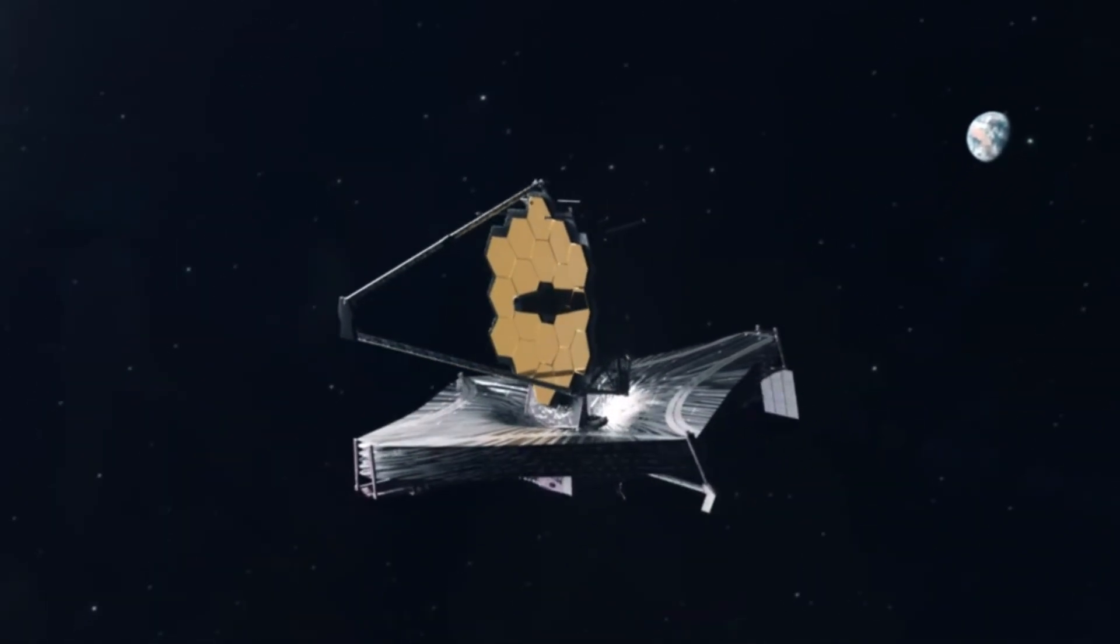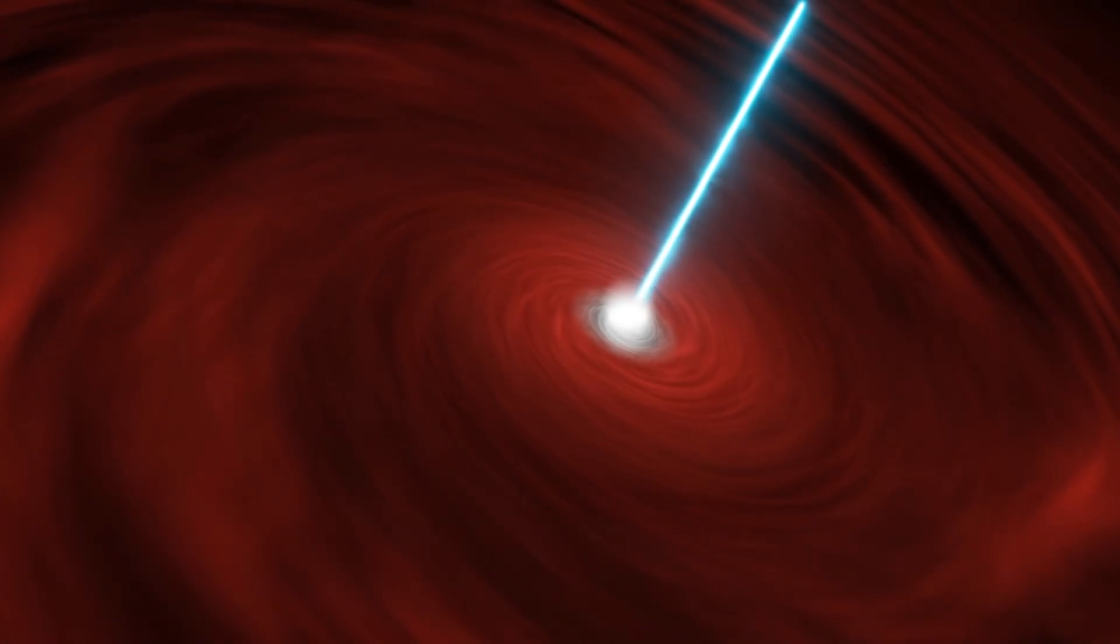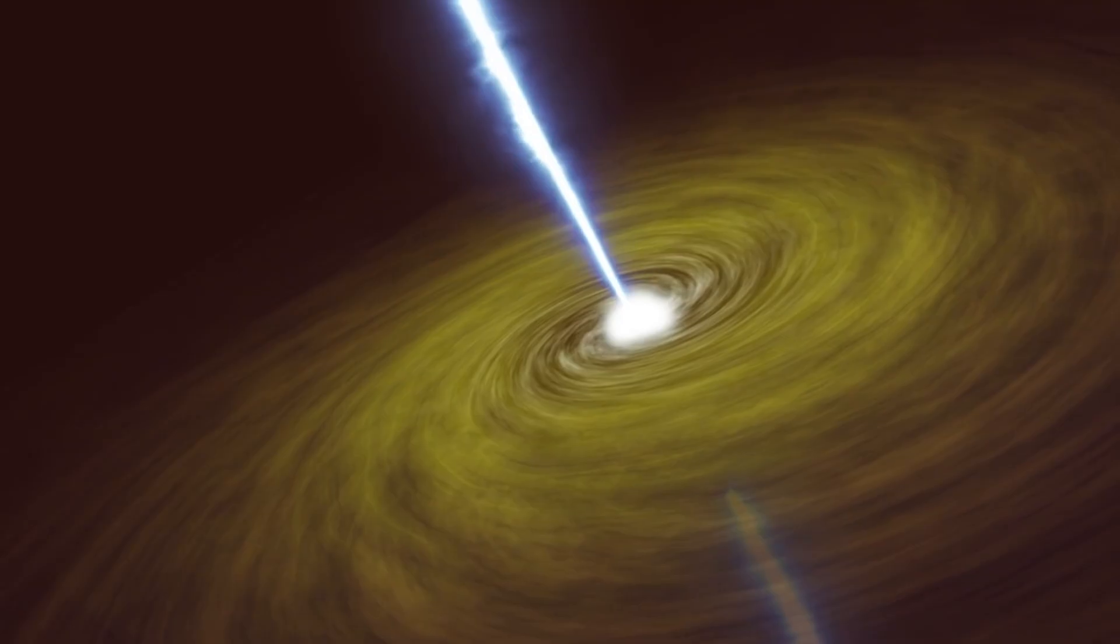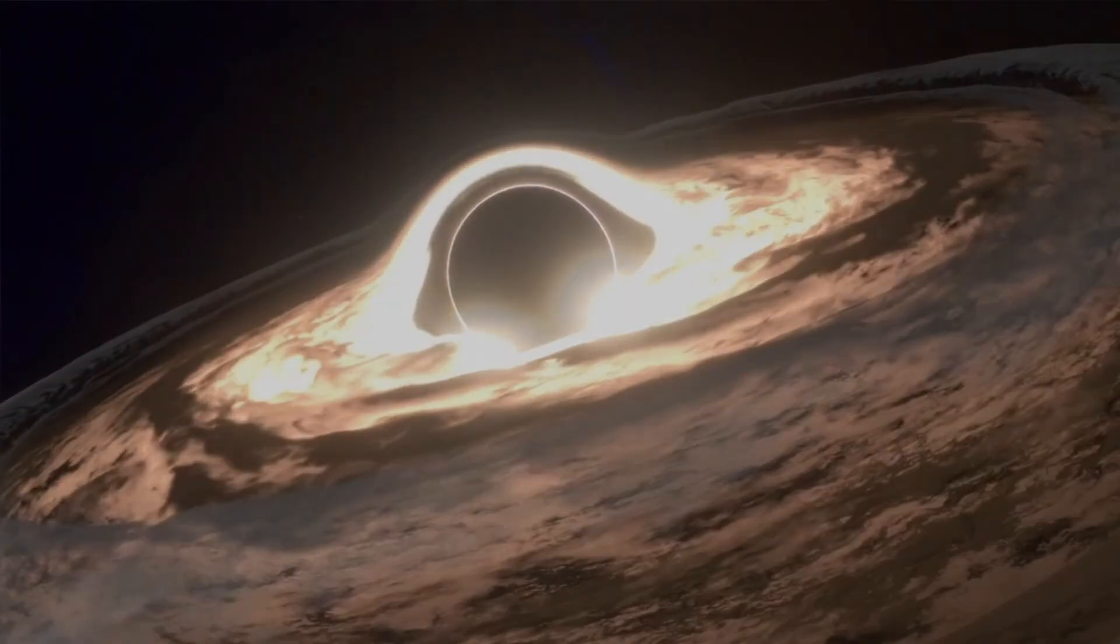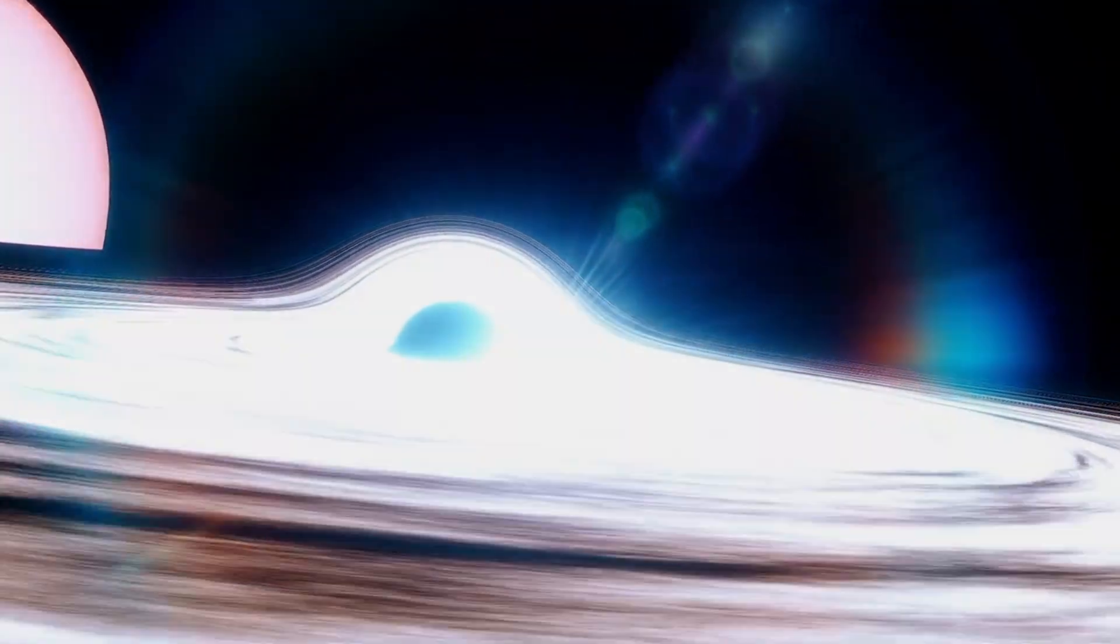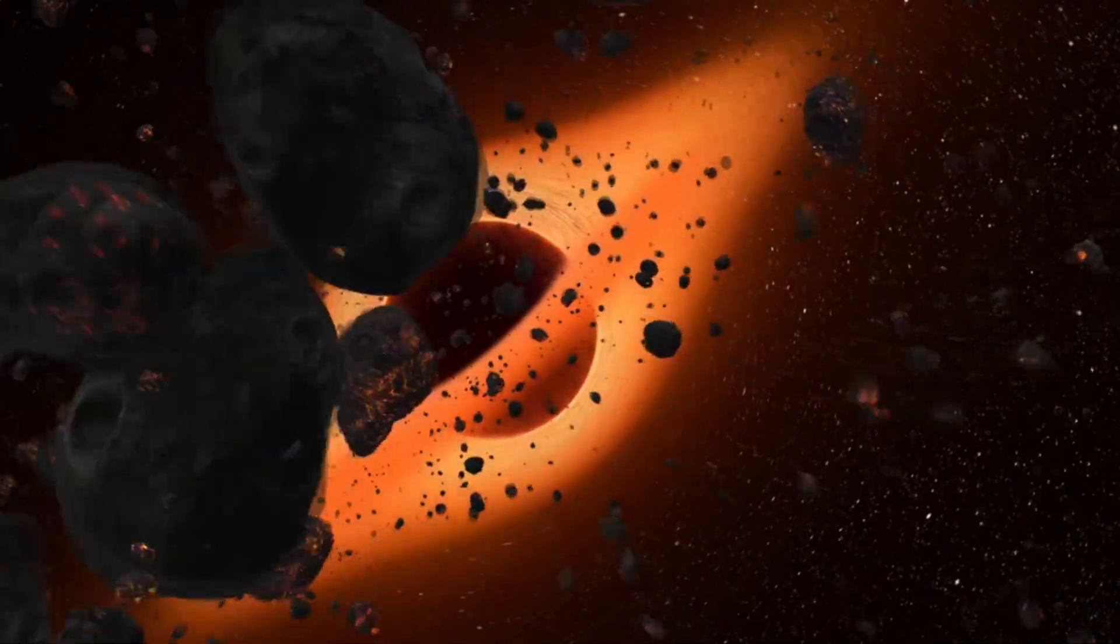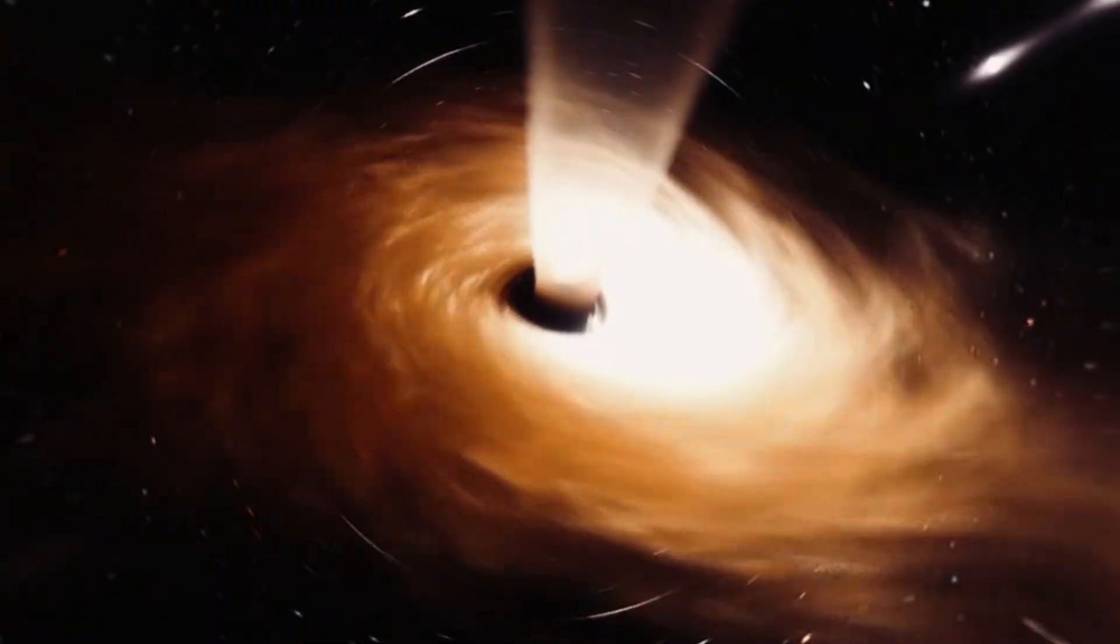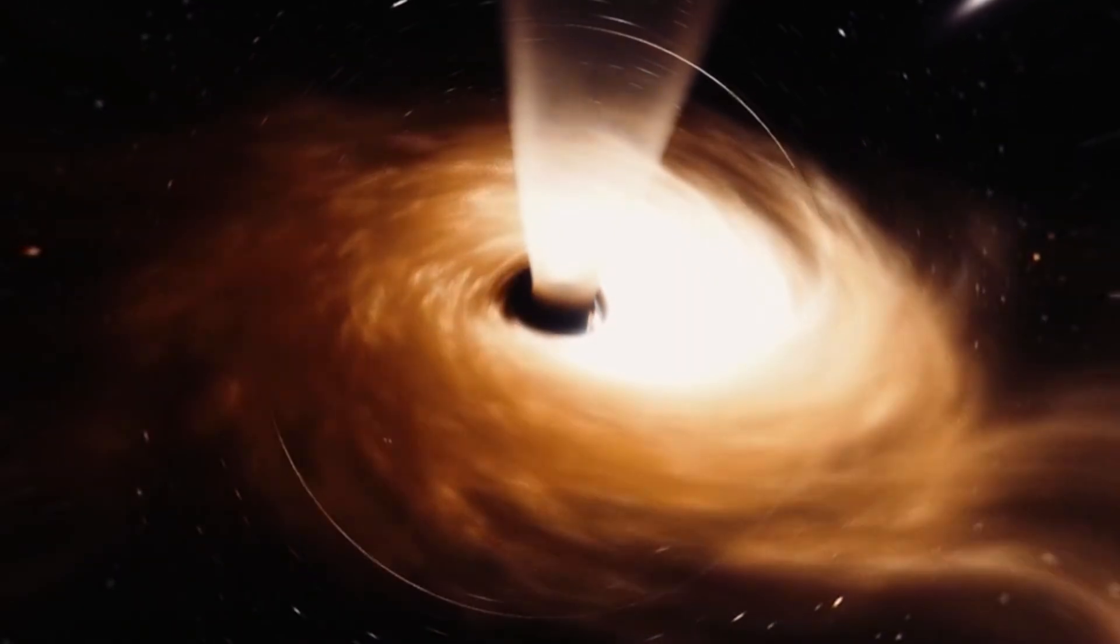The James Webb Space Telescope is offering an unprecedented glimpse into the hearts of the earliest and most distant supermassive black holes, known as quasars. And what it's uncovering is nothing short of remarkable. Through its deep space observations, James Webb is shedding light on how these ancient black holes significantly influence the formation and evolution of their host galaxies. Contrary to earlier assumptions that black holes might simply devour matter and inhibit star formation, the data reveals that many of these early quasars are embedded in environments rich with star formation and dynamic galactic activity.